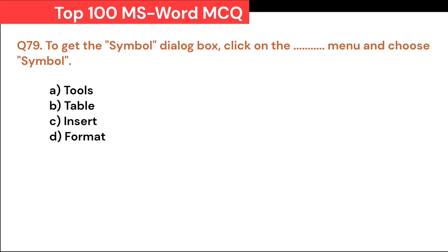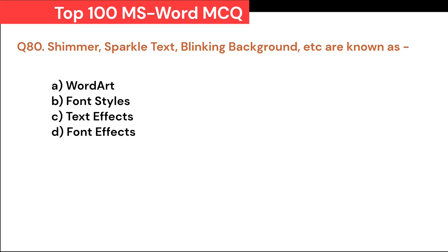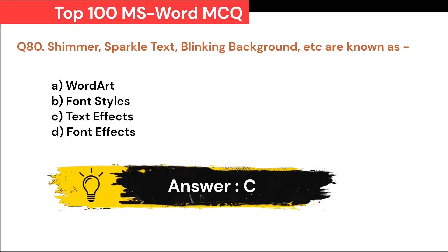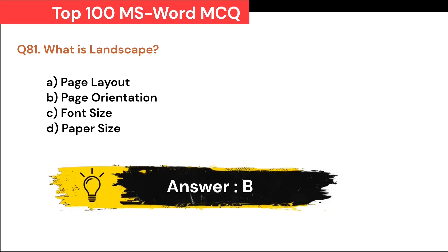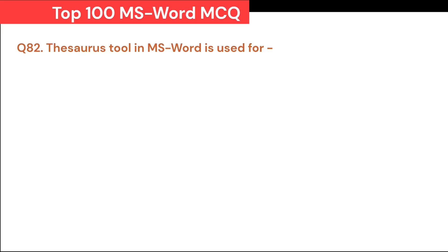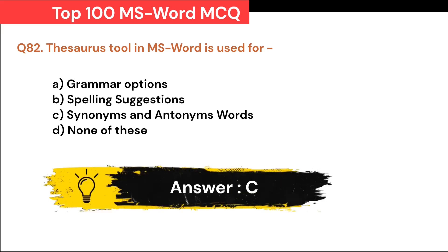To get the Symbol dialog box, click on the Dash menu and choose Symbol: A. Tools. B. Table. C. Insert. D. Format. Correct answer is C. Insert. Shimmer, sparkle text, blinking background, etc. are known as: A. Word Art. B. Font styles. C. Text effects. D. Font effects. Correct answer is C. Text effects. What is landscape? A. Page layout. B. Page orientation. C. Font size. D. Paper size. Correct answer is B. Page orientation. The Thesaurus tool in MS Word is used for: A. Grammar options. B. Spelling suggestions. C. Synonyms and antonyms. D. None of these. Correct answer is C. Synonyms and antonyms.